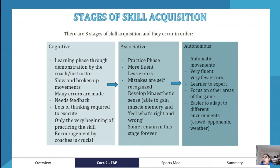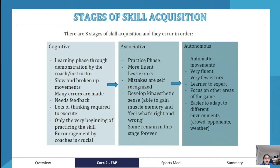There are three stages of skill acquisition. You start off with cognitive. A cognitive learner is someone in the learning phase who needs a coach or demonstrator to walk them through what is happening. The movements are slow and broken down into pieces so they can see what is happening. Many errors are made and they need lots of feedback to correct their technique.